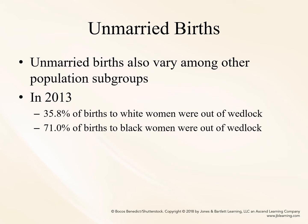Unmarried births also vary among other population subgroups. In 2013, 35% of births to white women were out of wedlock, and 71% of births to black women were out of wedlock. Remember, unmarried includes both women who are single and those who are cohabitating with the father of their child or with another partner.